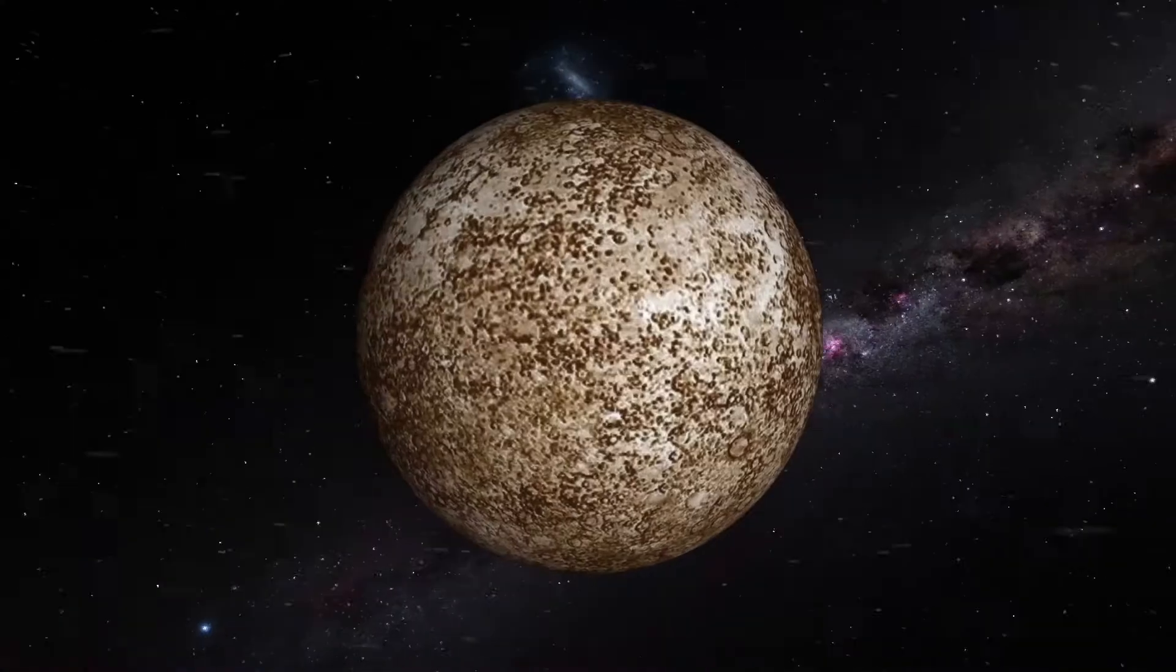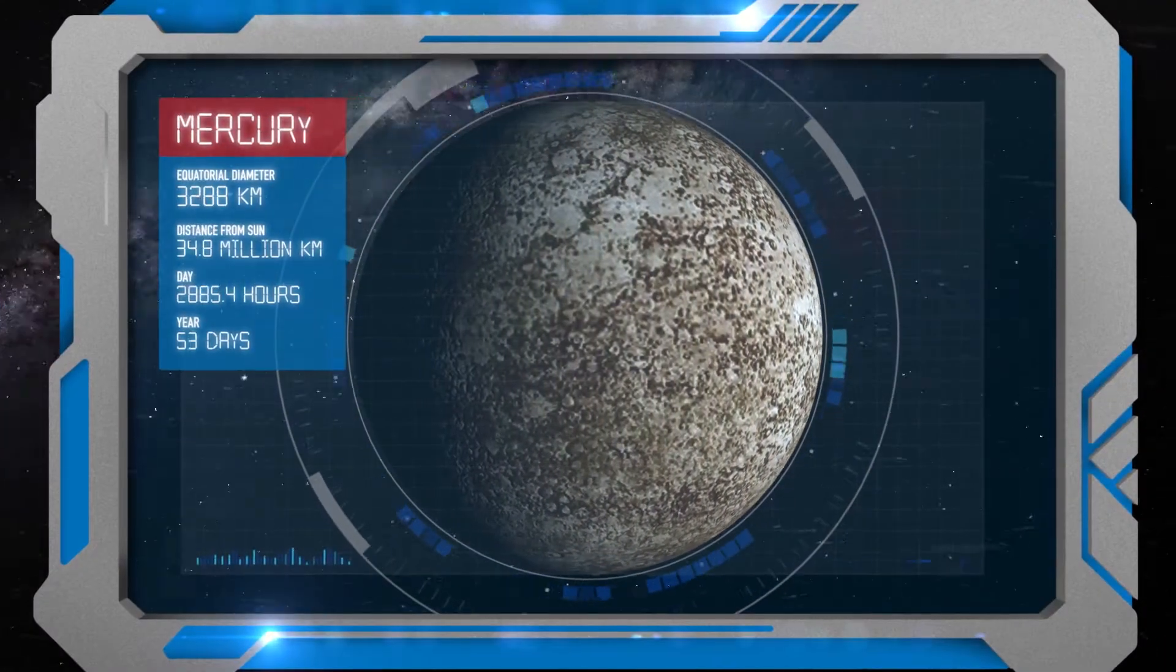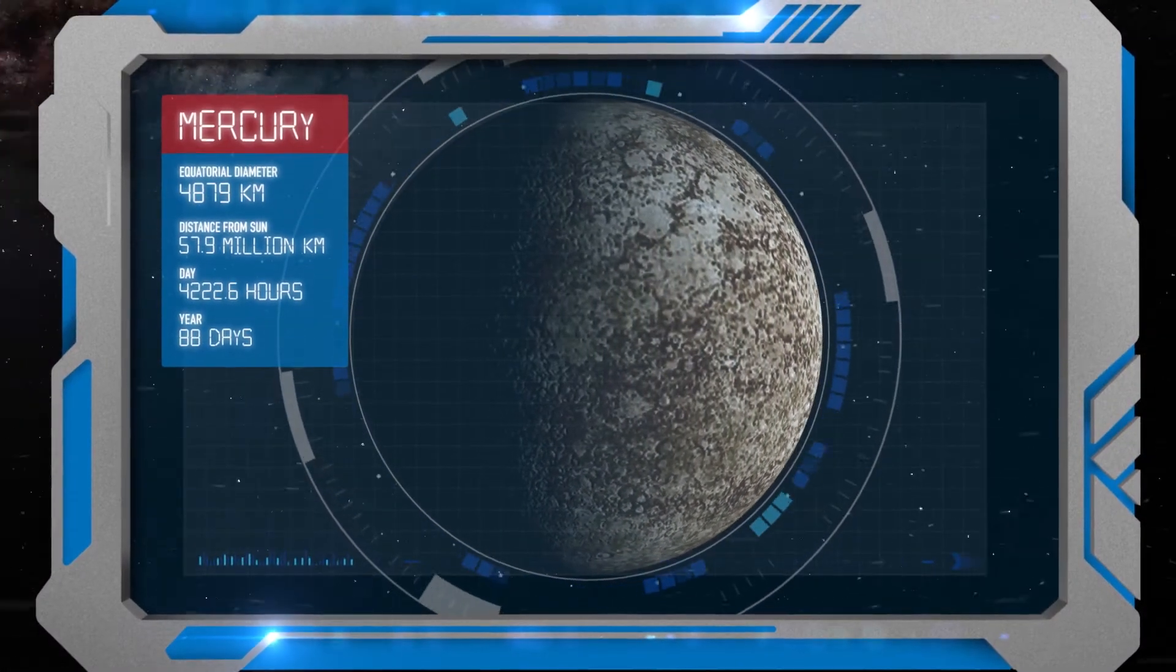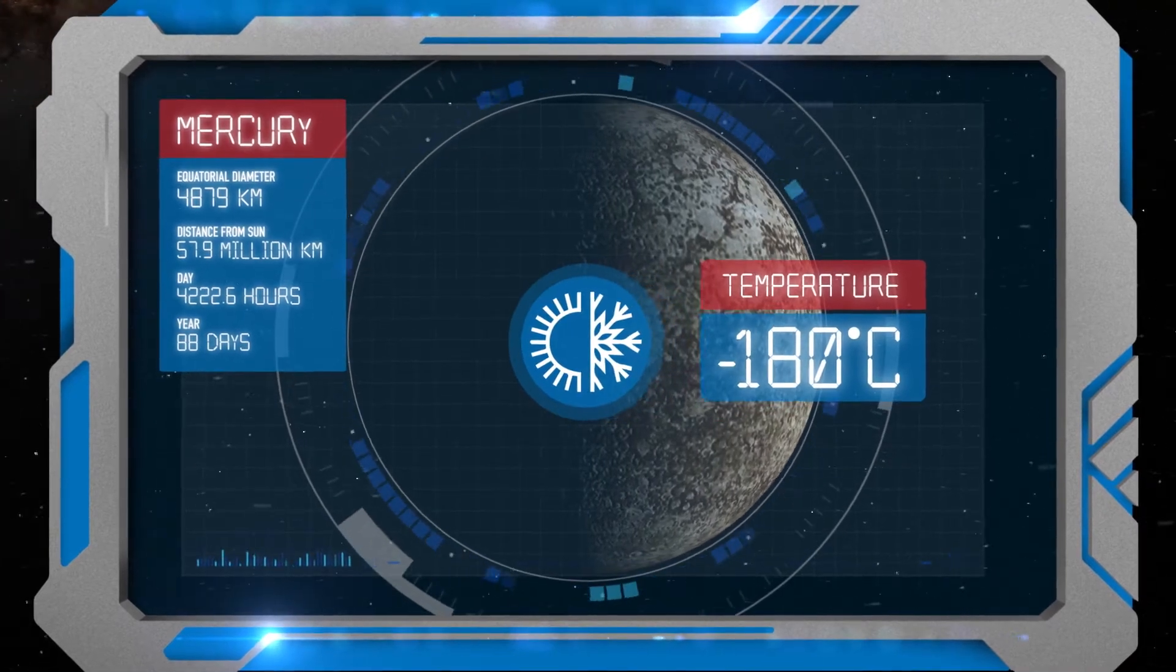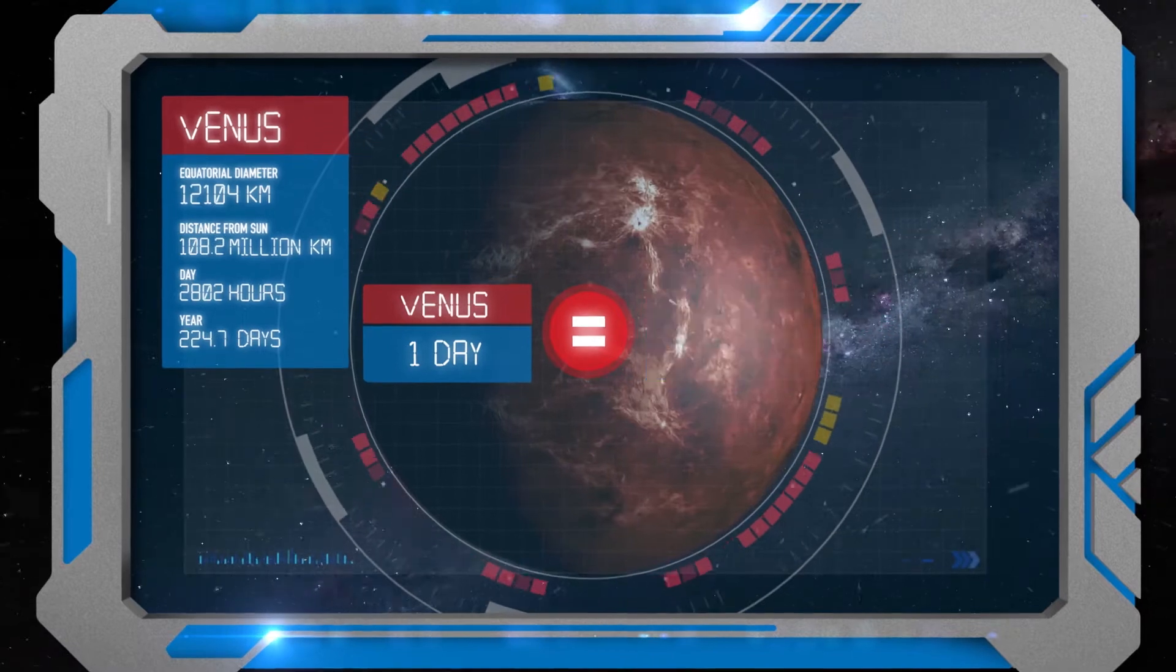Mercury zooms around the Sun with one side baking hot and the other 180 degrees below freezing. On cloudy Venus, one day is longer than a year on Earth.